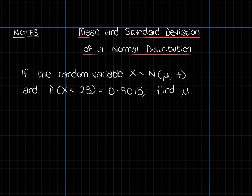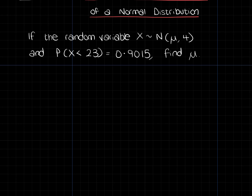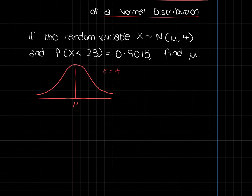What we need to do is think about what we know. It's always useful to draw a little sketch. We've got a normal distribution with mean mu and sigma equal to 4. We know that the probability under 23 is 0.9015, so 23 has got to be up above the mean somewhere, and this area to the left is 0.9015.